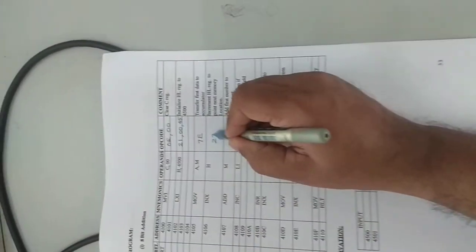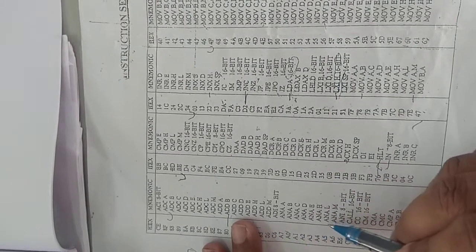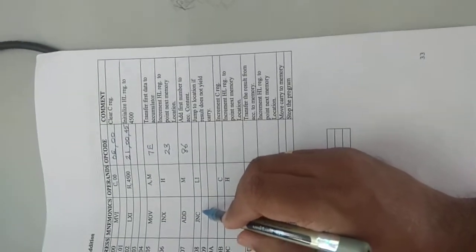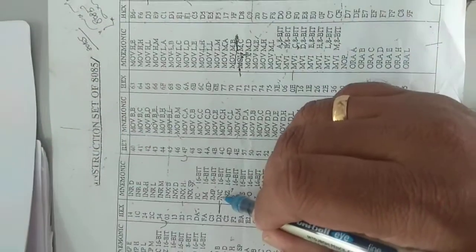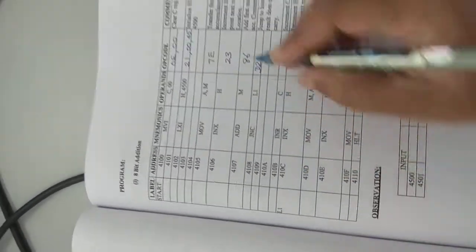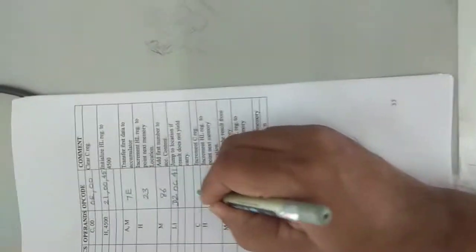Similarly, MOV A,M — the opcode for MOV A,M is 7E. INX H is 23. ADD M — checking the opcode sheet, ADD M is 86. JNC stands for Jump on No Carry; the opcode is D2. The label L1 is at address 410C, so we write the lower-order byte first: 0C, then 41.